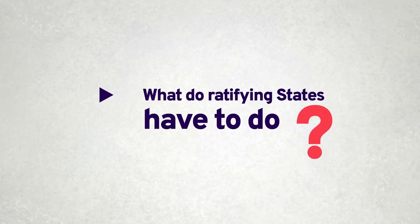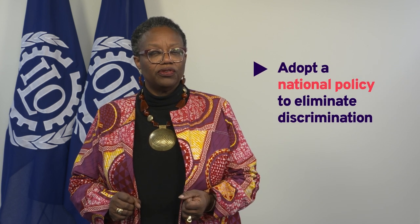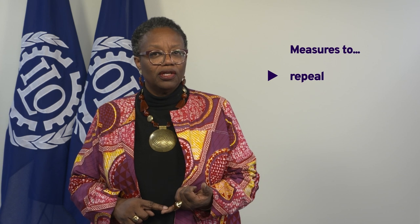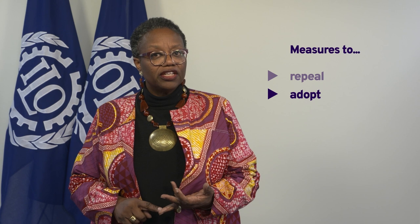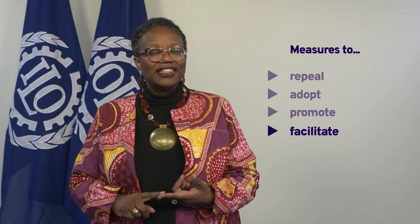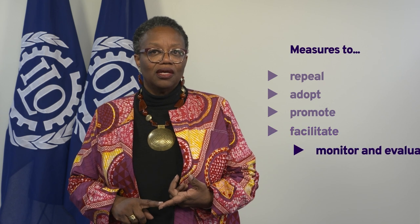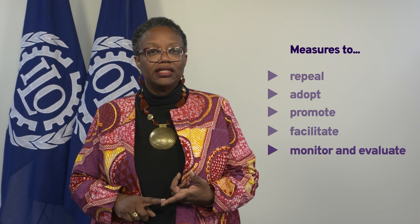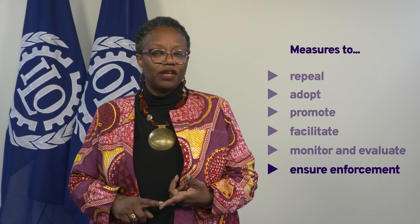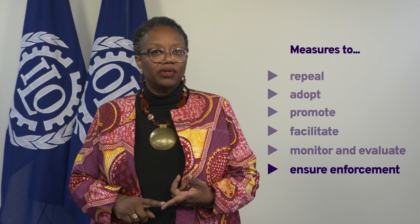What do ILO Member States have to do with a view to implementing Convention 111? Each ratifying country has to put in place a national policy promoting equality of opportunity and treatment, with a view to eliminating discrimination. This policy should contain measures aiming at repealing discriminatory provisions or eliminating discriminatory practices, adopting legislation promoting equality, adopting voluntary measures promoting educational programs, facilitating cooperation with social partners — and collective bargaining agreements can be a very powerful tool in that regard — and ensuring effective enforcement of the measures adopted, which means having an efficient labour inspection system and an accessible and independent judicial system.